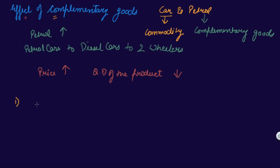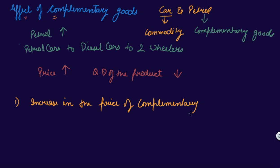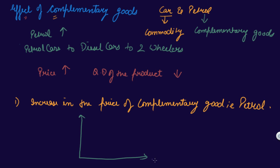Let's take the example of an increase in the price of the complementary good — that is, petrol — and see it on a graph. Here we will take the quantity of car on one axis and the price of car on the other.